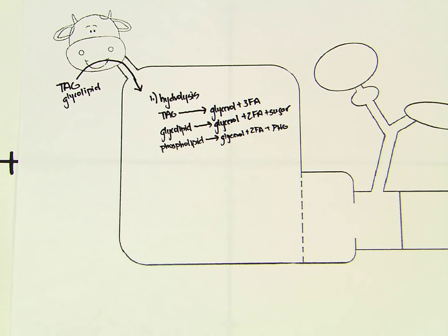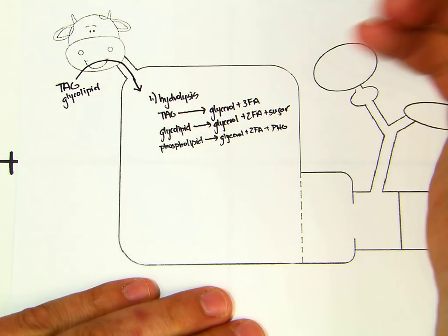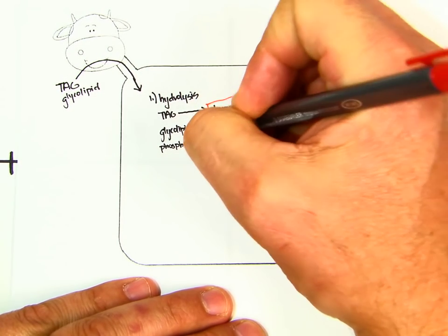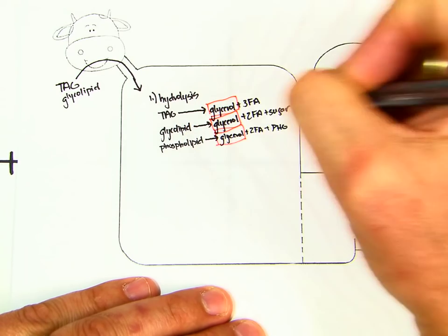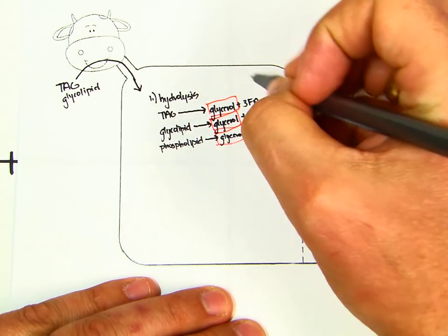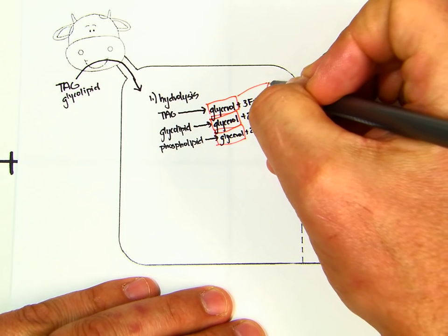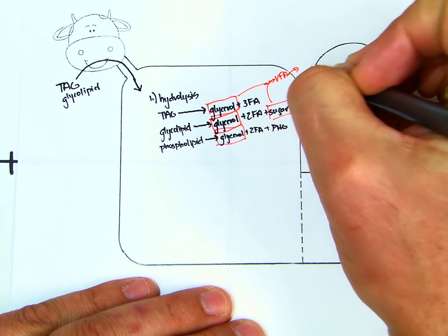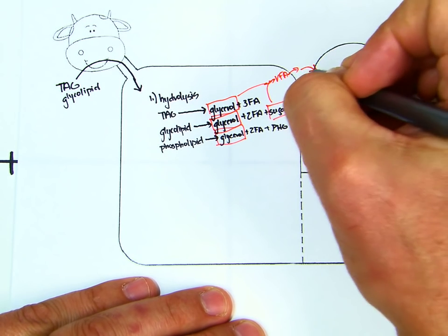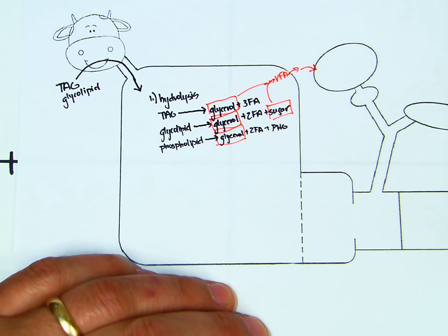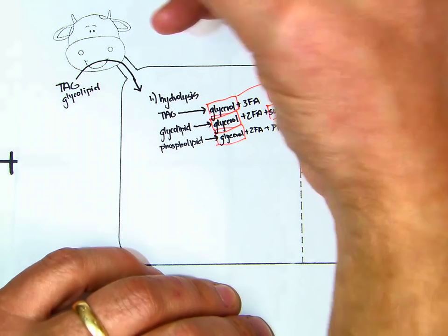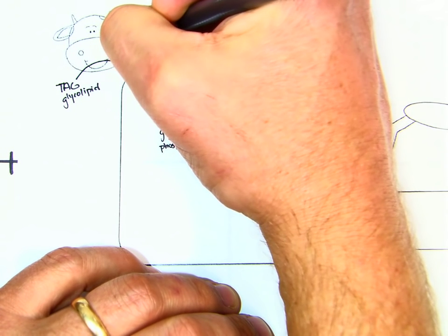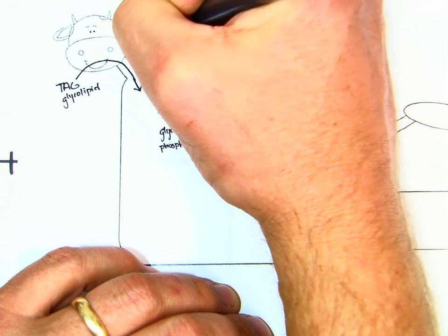After hydrolysis, we're going to box in the things that are fermented. The glycerol will be fermented — all three glycerols — and then the sugar, and that results in the production of VFAs, which get absorbed and subsequently go to the liver. One other thing that happens is in the mouth, we decrease particle size.